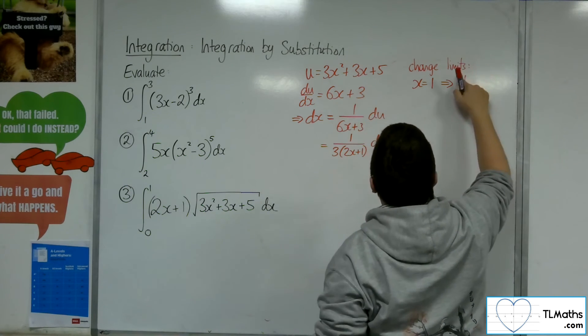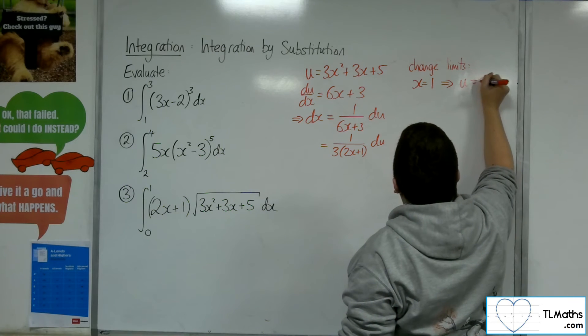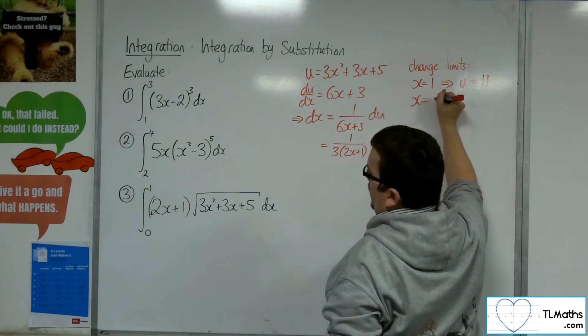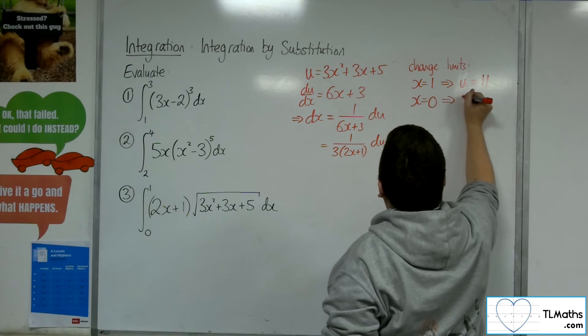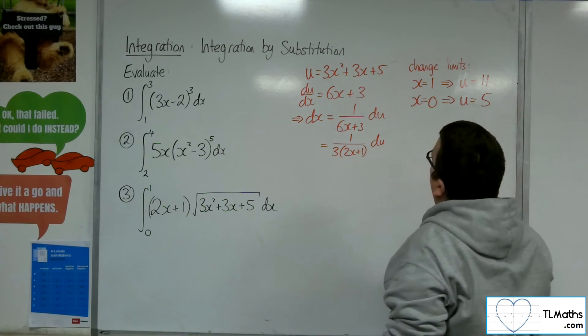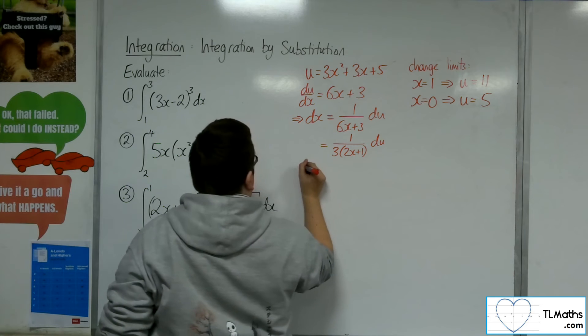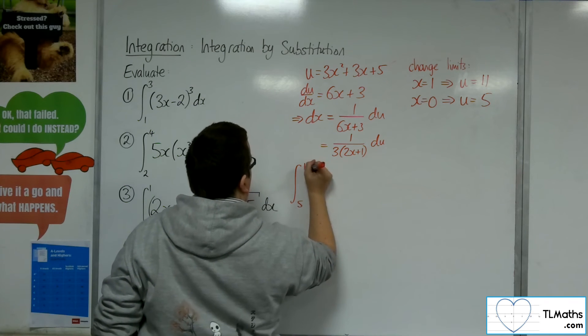Oh, u equals 11. And when x is equal to 0, u will be equal to 5. So we're integrating between 5 and 11.